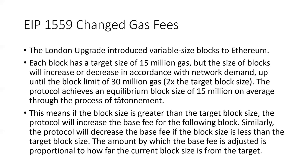Recently, the London upgrade, which is EIP-1559, introduced variable size blocks to Ethereum and changed how gas fees work. Each block now has a target size of 15 million gas, but the size of blocks will increase or decrease in accordance with network demand, up to the block limit of 30 million gas, which is double the target block size. The protocol achieves an equilibrium block size of 15 million on average — basically, as the block size gets larger, we start charging more until the price comes down. So if the block size is greater than the target, the protocol will increase the base fee for the following block.